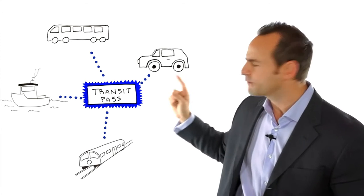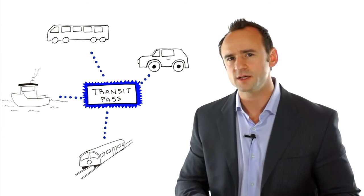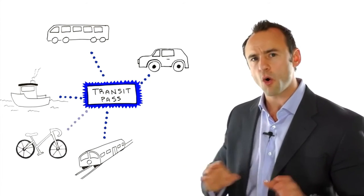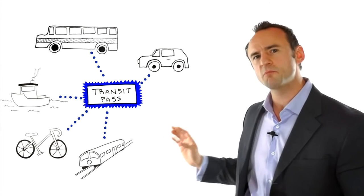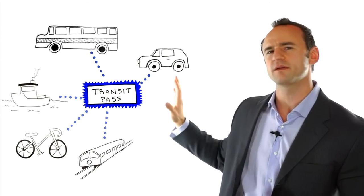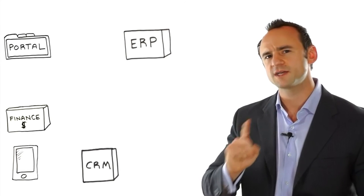When a new form of transportation was introduced, like community bicycles, or when an existing bus line was replaced, nothing needed to change for employees — they could still use their transit pass. In enterprise IT, companies have a variety of systems — ERP, CRM, financial systems, web portals, mobile portals — and SOA principles allow creating a single way to communicate across all of them.